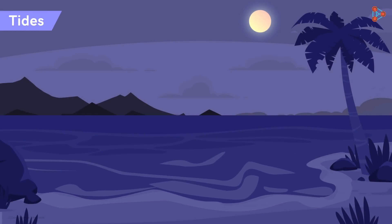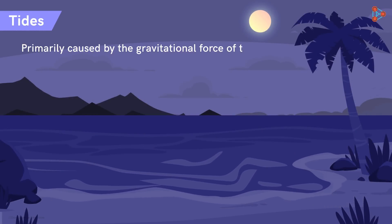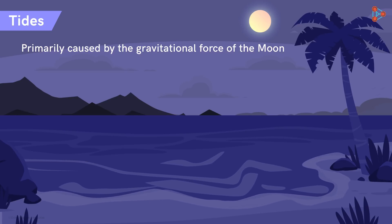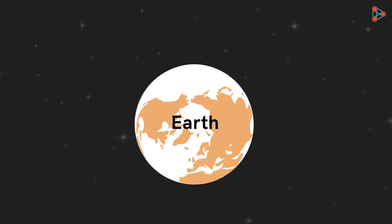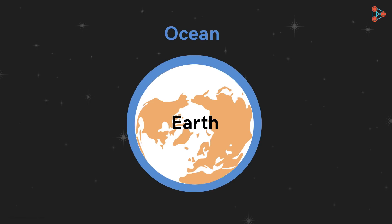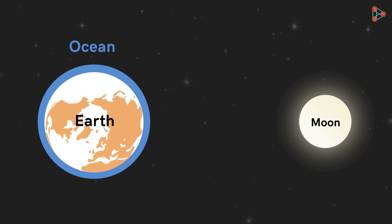These tides are primarily caused by the gravitational force of the moon. Let's understand how! The earth can be imagined as a sphere, surrounded by a layer of the ocean, and the moon as another sphere.